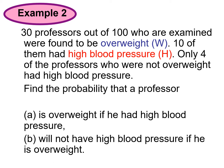Example 2. 30 professors out of 100 who were examined were found to be overweight — this is W. 10 out of them had high blood pressure, which stands for H. Only 4 of the professors who were not overweight, meaning W prime, had high blood pressure, so there is an intersection between W prime and H.